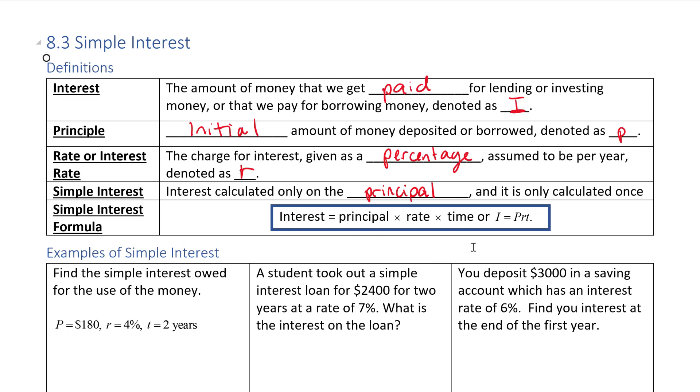There's a formula for the interest. It's interest equals principal times rate times time, or simpler, I equals PRT.